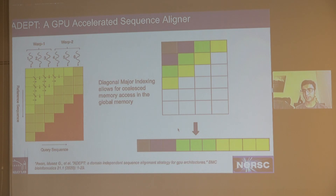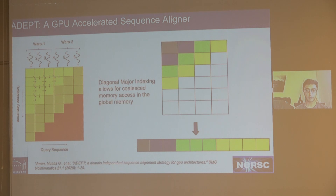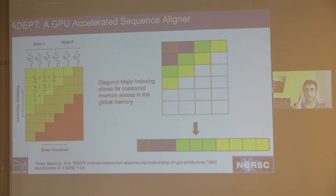One of our PhD students recently implemented a compression strategy that uses just 3 bits to reflect the direction of the traceback pointer — left, up, or diagonal. This allowed us to achieve a significant storage memory reduction for the traceback matrices. That work is still in the process of being written up and should be published soon.